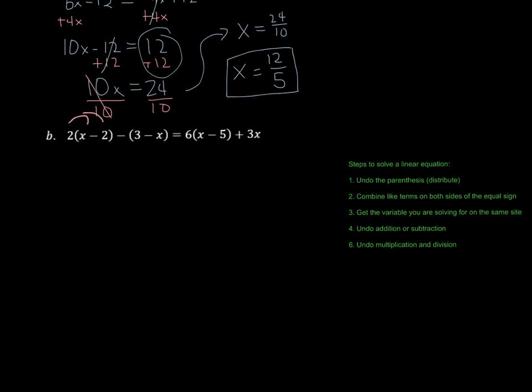So we're going to distribute the 2 here, and we're going to get 2x minus 4. Again, we distribute, it's like distributing the negative sign or multiplying a negative 1. Negative 3, or negative times positive 3 is going to give us minus 3. And then this negative times a negative x makes that a positive x equals, and then we bring the 6 in here, and we're going to get 6x. 6 times negative 5 is negative 30 plus 3x.